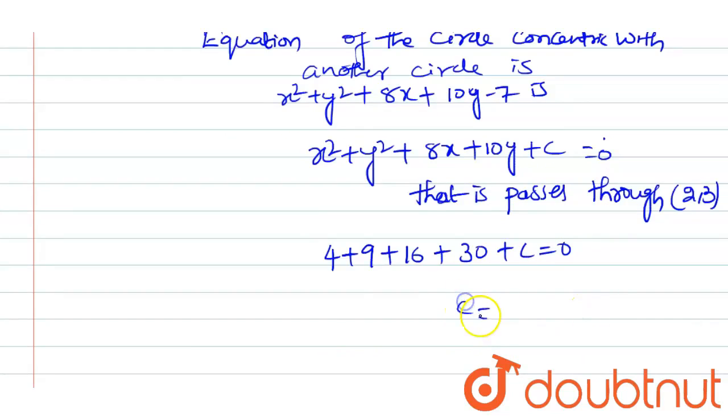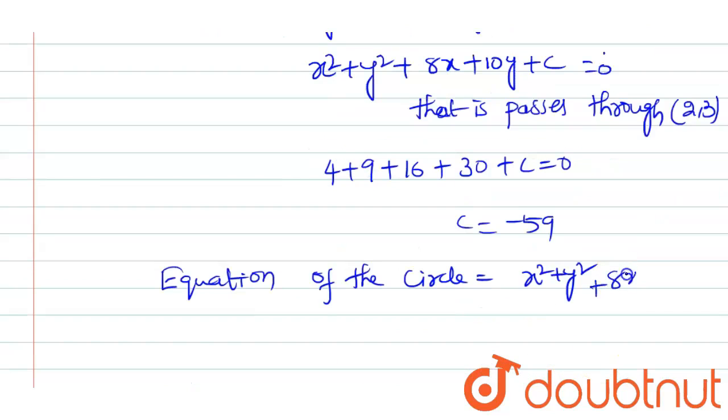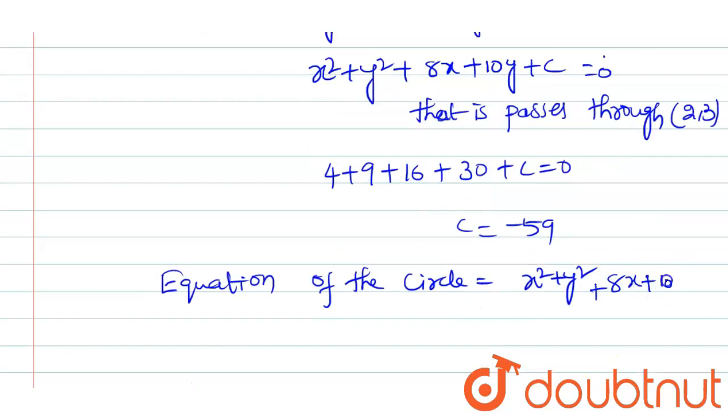The value of c equals minus 59. Therefore, the equation of the circle is x square plus y square plus 8x plus 10y minus 59 equals 0.